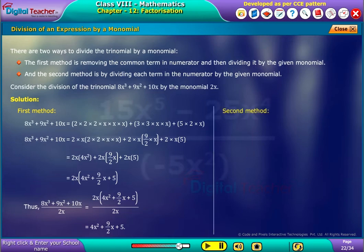The second method of solving is to divide each term of the trinomial by the monomial using cancellation method. That is, 8x³ divided by 2x plus 9x² by 2x plus 10x by 2x, which equals 4x² + (9/2)x + 5.